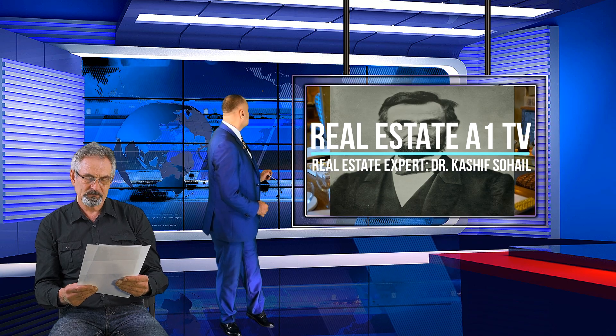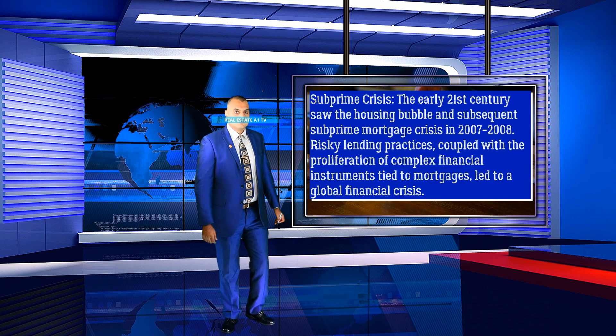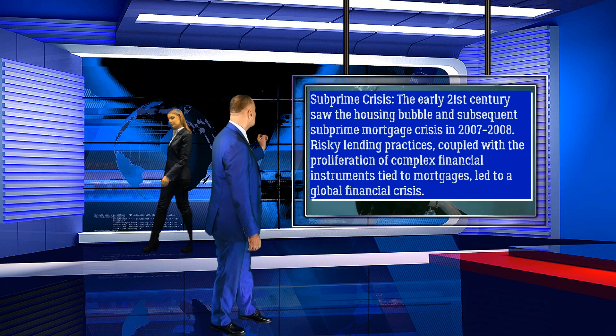In the latter half of the 20th century, the mortgage market underwent significant changes with the advent of securitization. Mortgage-backed securities (MBS) allowed banks and lenders to bundle mortgages and sell them to investors, reducing their exposure to risk and increasing liquidity in the market. The early 21st century saw the housing bubble and subsequent subprime mortgage crisis in 2007 to 2008, where risky lending practices coupled with the proliferation of complex financial instruments tied to mortgages led to a global financial crisis.